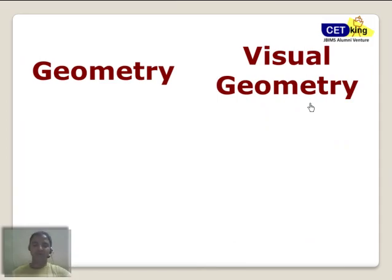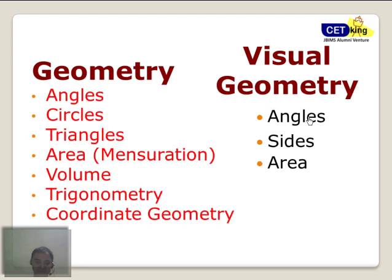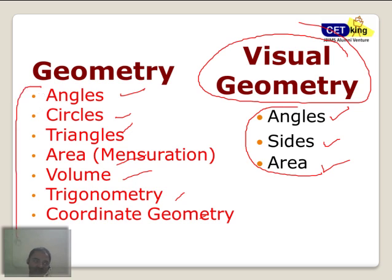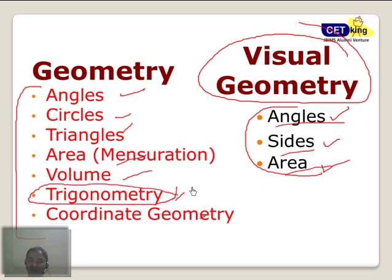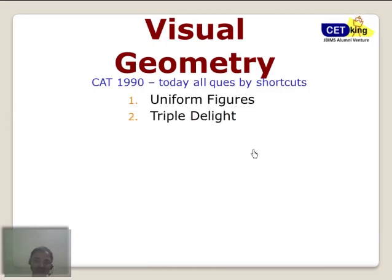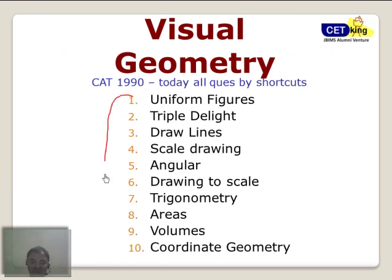Moving on to the geometry section — this video covers the geometry part. Traditional geometry includes angles, circles, triangles, areas, mensuration, volume, trigonometry, and coordinates. But in visual geometry — which is my shortcut for the next four hours — it is basically about angles, sides, and areas. Every question, whether it looks like trigonometry or coordinate geometry, is ultimately asking for an angle, a side, or an area. So your scope is fixed. These 10 logical concepts are our main concepts and are more than sufficient to cover everything in geometry.